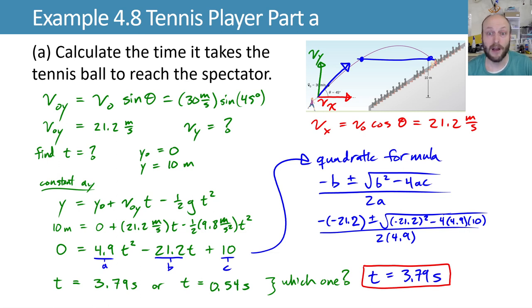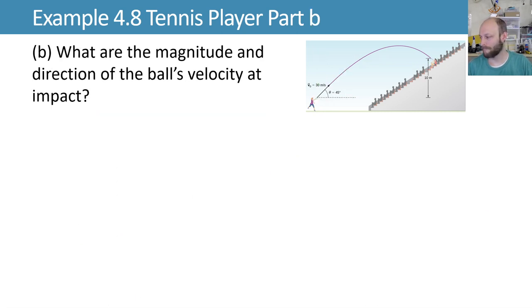Onto part b. What are the magnitude and direction of the ball's velocity at impact? We can look at our x velocity. This is the easy one. It's a constant velocity, so we know the x velocity at impact is whatever it started with, 21.2 meters per second. Again, for all of this, we're neglecting aerodynamic drag.